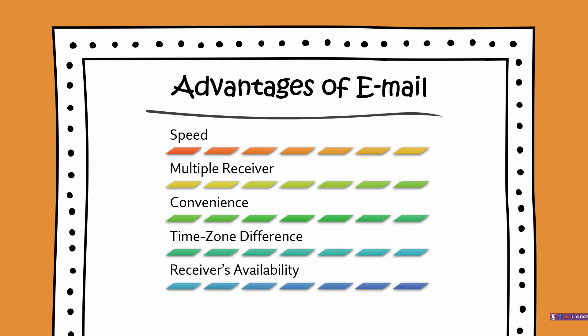Next is receiver's availability. Unlike a phone call, an email does not depend on the availability of the recipient at that particular moment. The receiver gets it as soon as he checks his mailbox, and communication continues provided he checks it regularly. In a phone call, a person should be available so we can talk, but in the case of email that is not the case — whenever the receiver gets time, he can check the mail and reply to it.